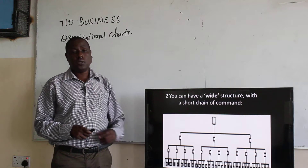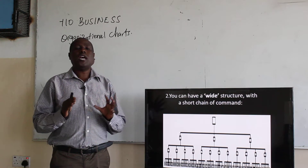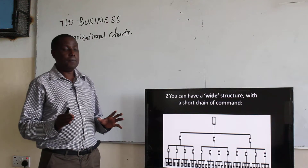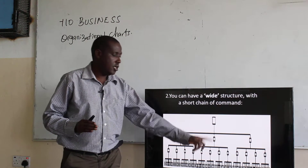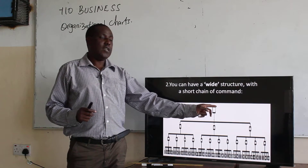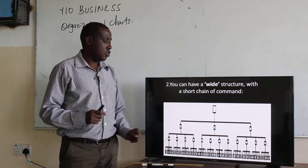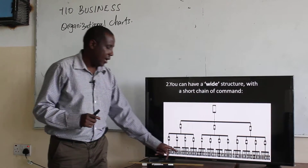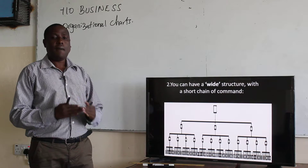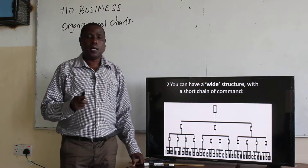Another type of organizational structure or chart is where we have a wide structure with a short chain of command. As you can see, we have the CEO here, then there are three leadership positions, then we have another level, and finally one more. So it is short, meaning information flows very fast, but it is also very wide — a short, wide structure.